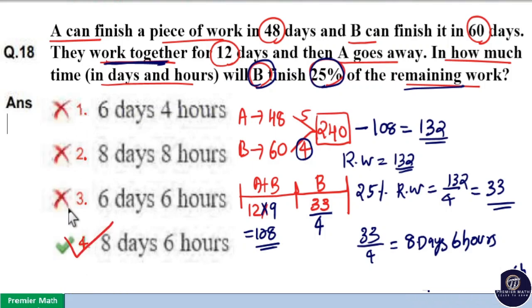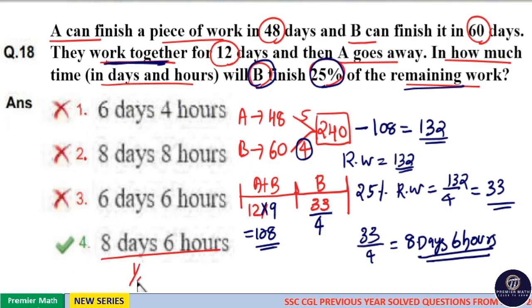So here the answer is option 4. 1 by 4 days means 24 by 4 hours which is equal to 6 hours.